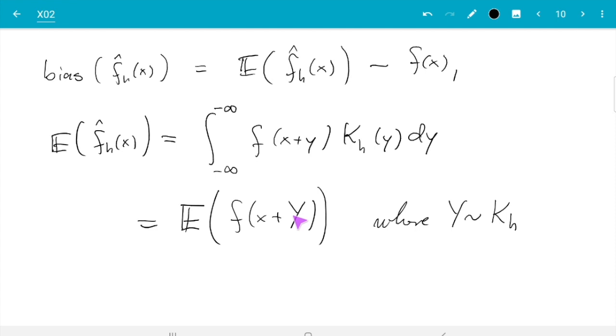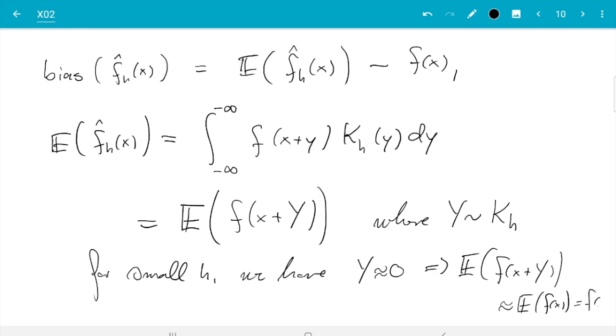So first thing, if h goes small then we have just discussed Y is always centered around zero and the variance is proportional to h squared. So if h decreases then Y gets more and more centered around the origin. So for small h we have Y is approximately zero and then expectation of f(x+Y) is approximately equal to expectation of f(x) which is constant, so we just get f(x).